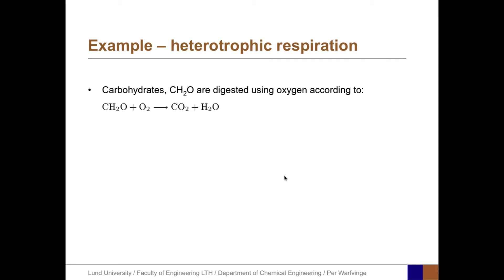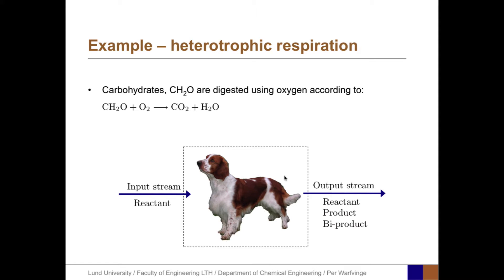Let's consider a system where carbohydrates, CH2O, are digested using oxygen according to the respiration reaction: CH2O plus oxygen gas O2 yields CO2 plus H2O. The system could be an organism with input streams including reactants, and one or more output streams with reactants, products, and possibly also by-products.